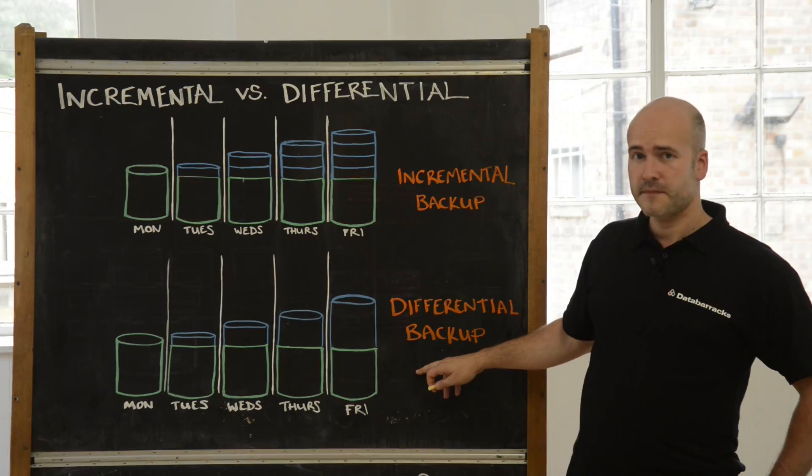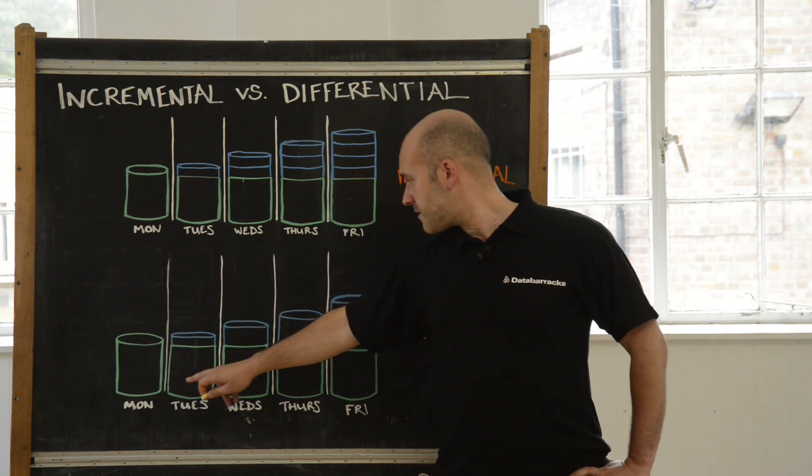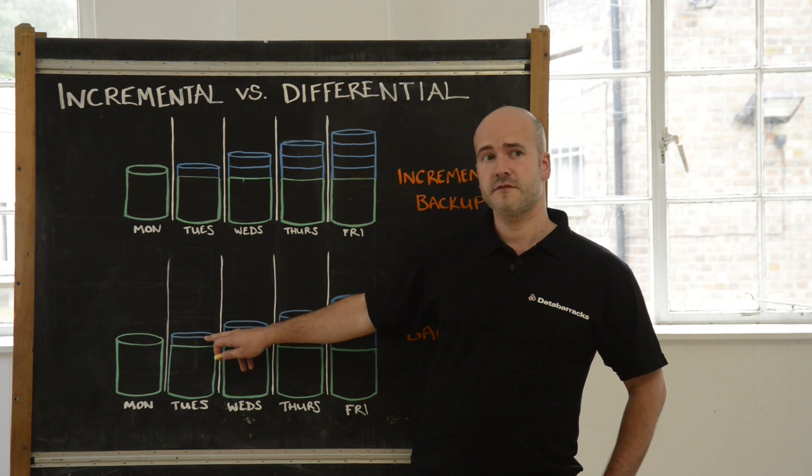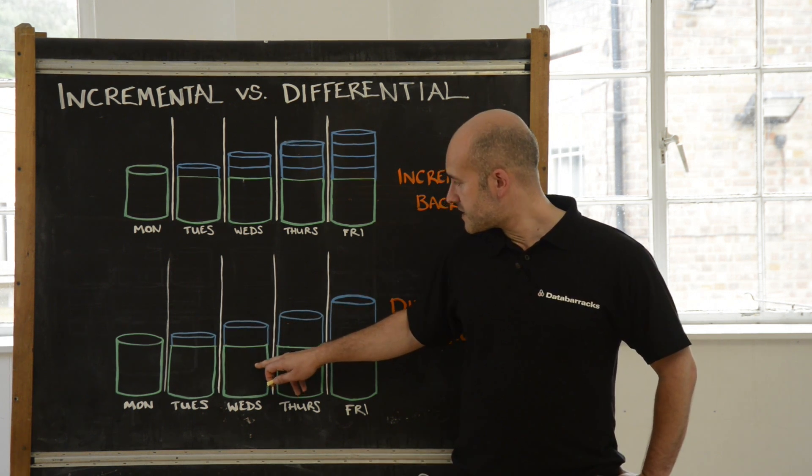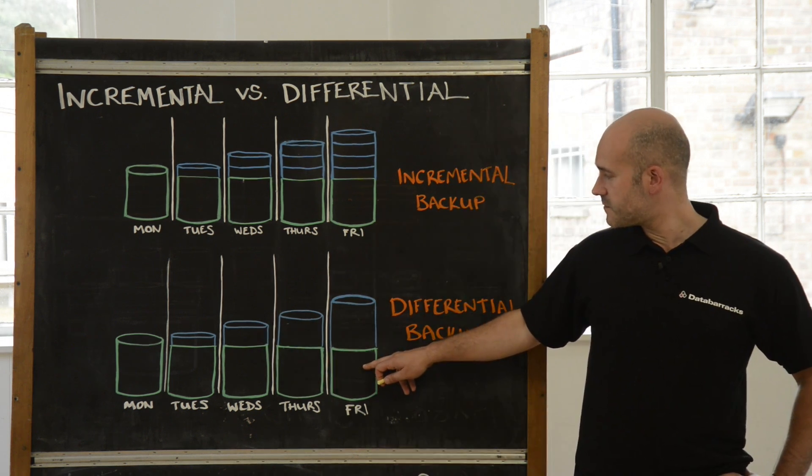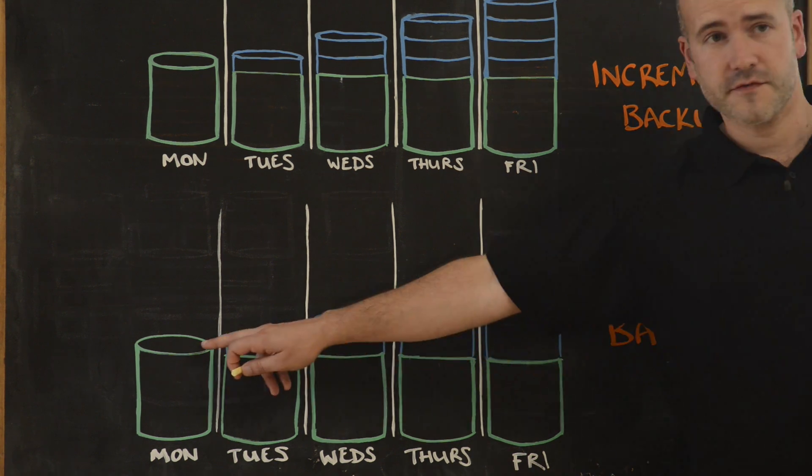With a differential backup, you still have the same full backup as you did initially. The following day, you'll have the full backup along with the changes from that day, and on the Wednesday, you do the same thing until you get to the Friday, which again is a full backup plus all the changes, but these are all the changes that have happened throughout the week.